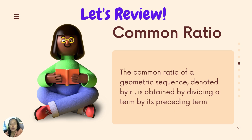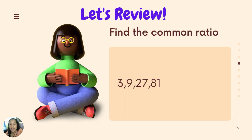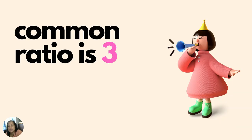Let's review how to find the common ratio. To find the common ratio, we divide a term by its preceding term. For example, in the sequence three, nine, twenty-seven, and eighty-one: nine divided by three is three, twenty-seven divided by nine is three, eighty-one divided by twenty-seven is three. Therefore the common ratio is three.